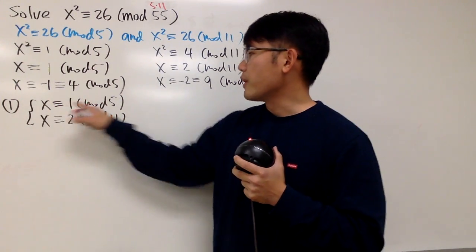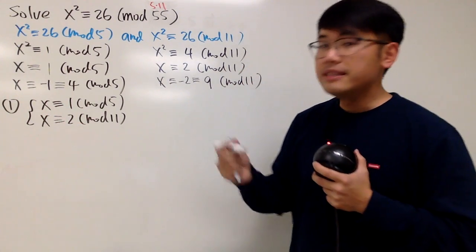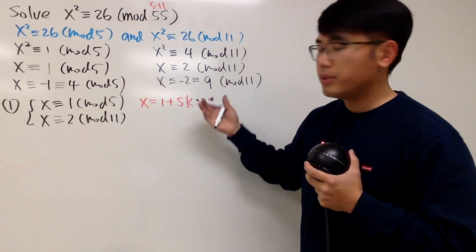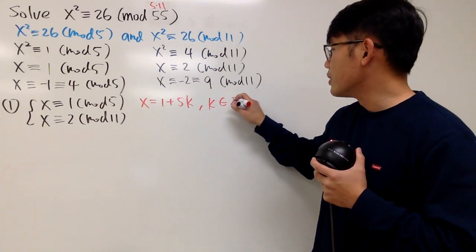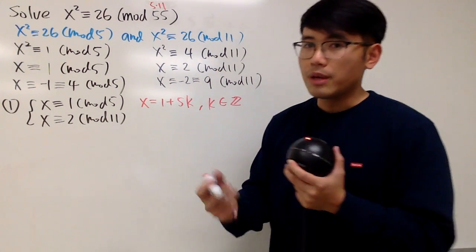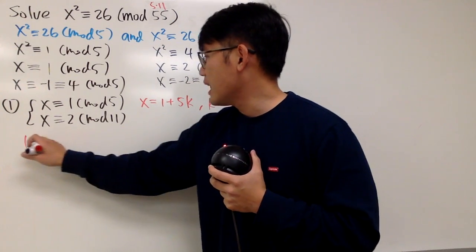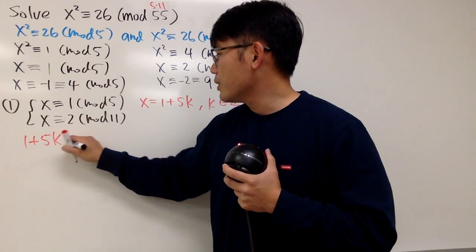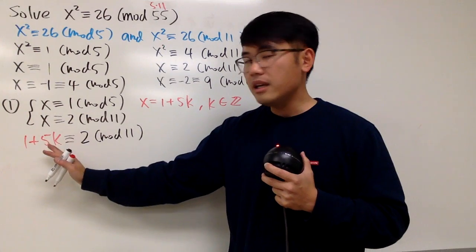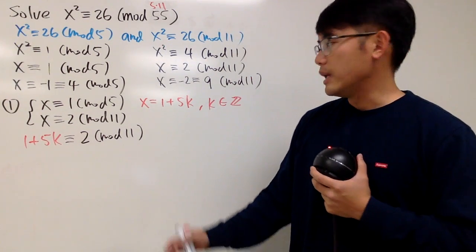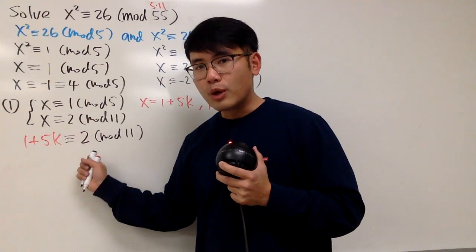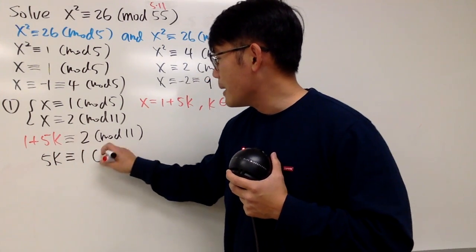Here we go. Start from the first system: x congruent to 1 mod 5 and x congruent to 2 mod 11. When x is congruent to 1 mod 5, this tells us x has to be in the form of 1 plus 5k for some integer k. Put this into the second congruence to make the connection: 1 plus 5k is congruent to 2 mod 11. From here we need to figure out k. Subtracting 1 from both sides gives 5k congruent to 1 mod 11.